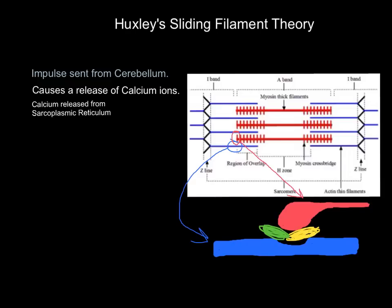When calcium is released, it attaches to troponin, which moves tropomyosin and exposes the binding site — allowing the myosin head to get in and form a cross bridge. This calcium is released from the sarcoplasmic reticulum, which is the fluid that exists in the muscle tissue. When the impulse from the cerebellum reaches the muscle site at the motor end plates, it causes the release of calcium from the sarcoplasmic reticulum into the sarcomere.